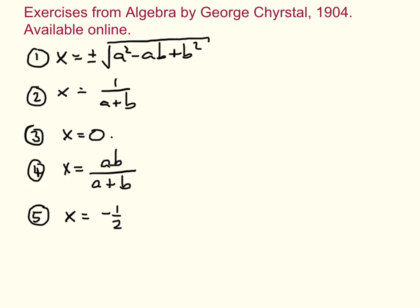Here we have the answers. For the first question it's this; the second is this; the third is solved by x equals naught; the fourth is solved this way; and the fifth is solved by x equals minus a half. If you'd like to check any of these or see how I tried to do it, carry on and see the solutions.